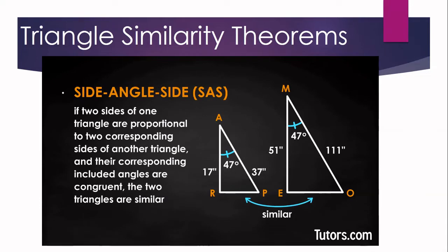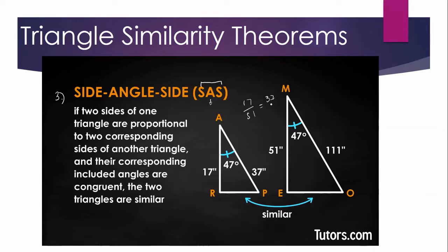Number three, we have the side-angle-side or SAS similarity theorem. It states that if two sides of one triangle are proportional to the corresponding sides of another triangle, and their corresponding included angles are congruent, then the triangles are similar. We have AR and ME: 17 over 51. And AP and MO: 37 over 111. If we multiply these, we will get the same answer.